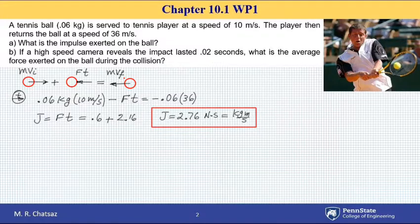I have J over T, or 2.76 Newton seconds divided by 0.02 seconds. Seconds cancel, and the impulsive force is going to be 138 Newtons.